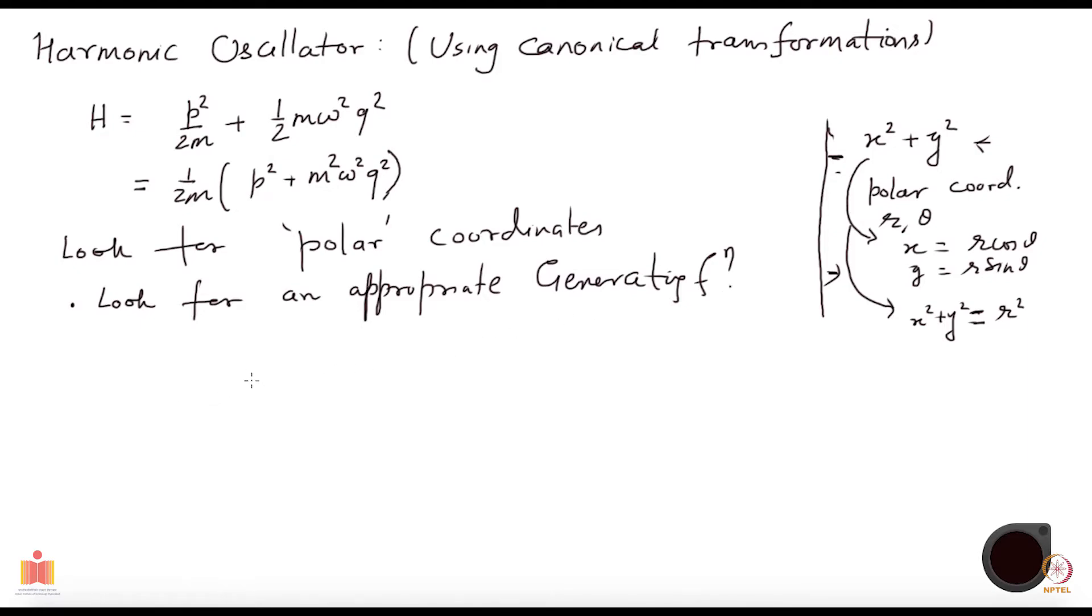Let us see what we want first. What we want is that my small p, just like my x here should become r times cos theta, should have some function f of capital P, which is the equivalent of r here, times cos of capital Q. So instead of having a piece cos theta here as we had in this case, here I look for a coordinate Q which appears in the argument of cos. And similarly my q, small q, should be f of capital P